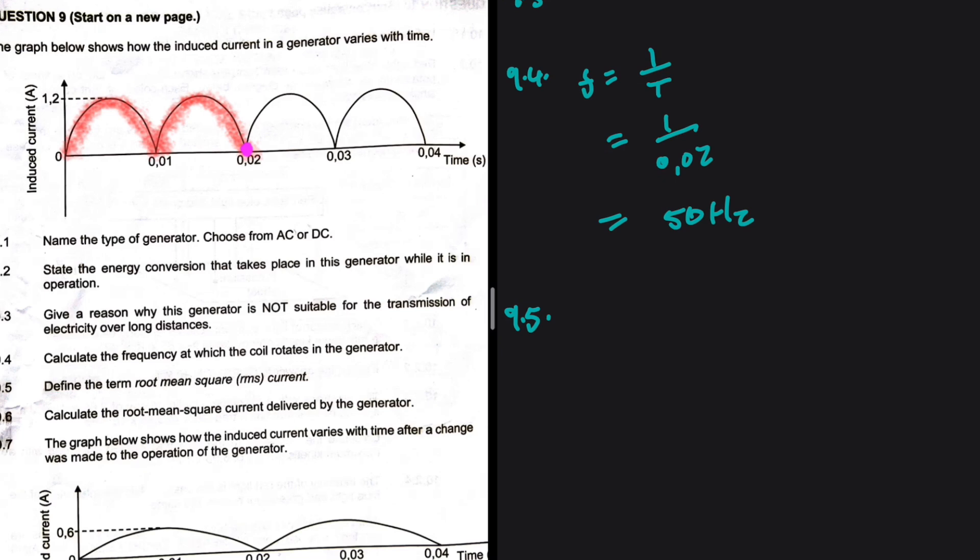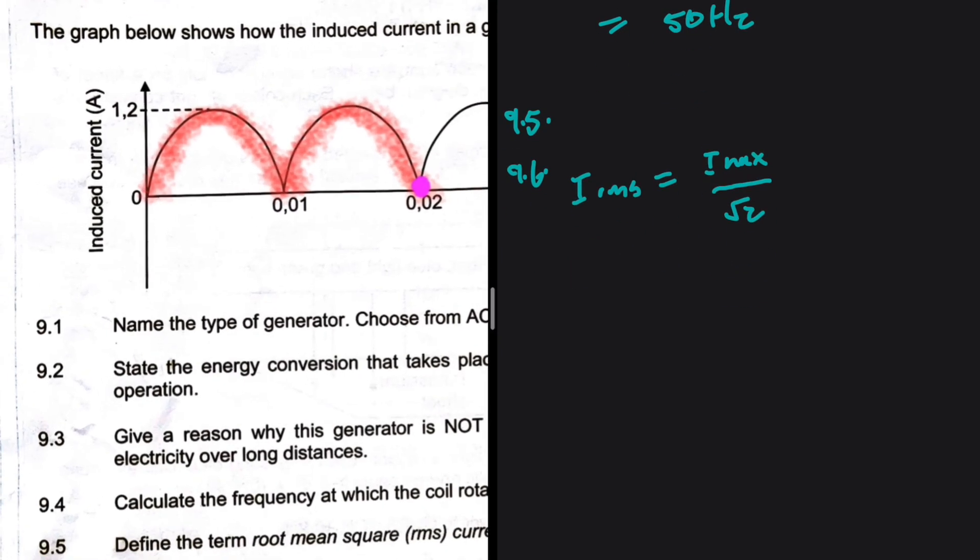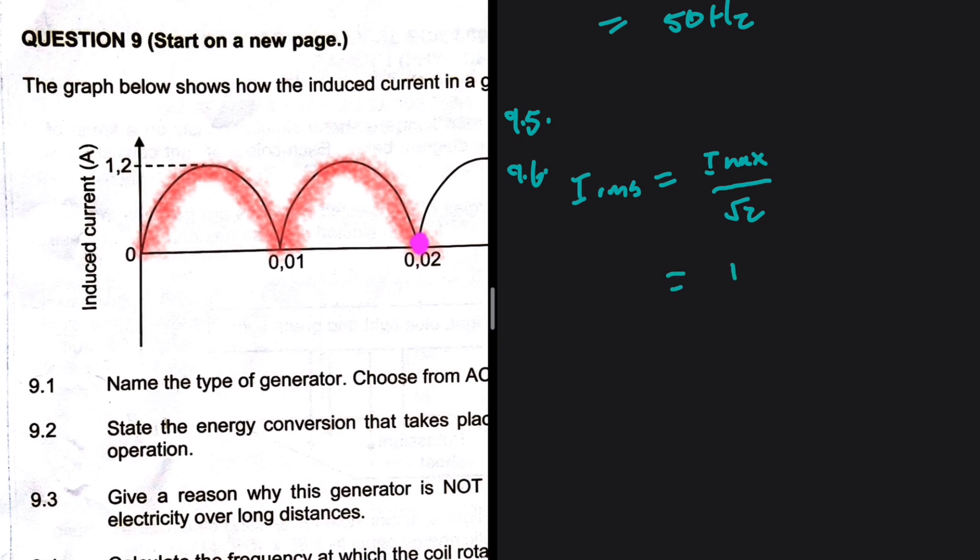9.5: Define the term root mean square current. Well, I'm going to leave that to you. 9.6: Calculate the root mean square current delivered by the generator. Let's go. We know that I_rms equals I_max divided by square root of 2. So we have 1.2 divided by square root of 2. Let me just put that in my calculator. I'm getting 0.85 ampere.